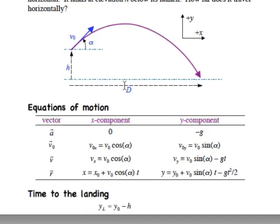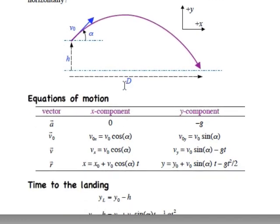We have exactly the same kinematic equations that we always have for these ballistic problems. Acceleration is negative g in the y direction. There is no acceleration in the x direction. The initial x component of velocity is v0 cosine alpha. The initial y component of velocity is v0 sine alpha.